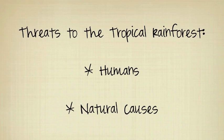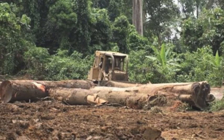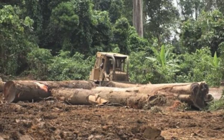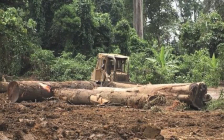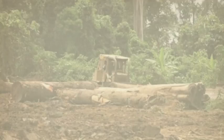The major threat to the tropical rainforest is humans. Companies buy the land, then clear it to build buildings, and then sell the wood from the trees for profit. Another threat to the rainforest are droughts, but this isn't near as bad as the impact humans have.